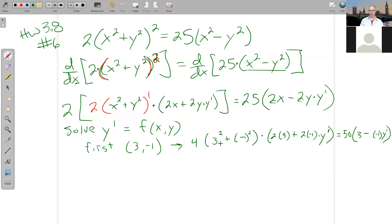So cleaning this up, what do we get here? We get 9 plus 1 is 10, times 4 is 40, times parentheses, and then here I have 6 minus 2y prime.